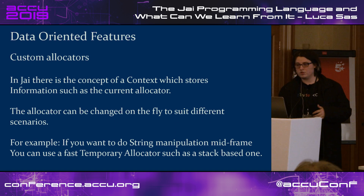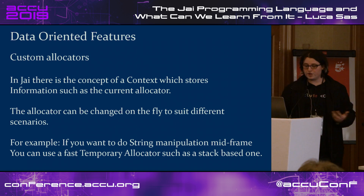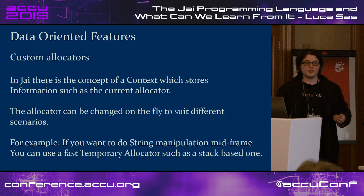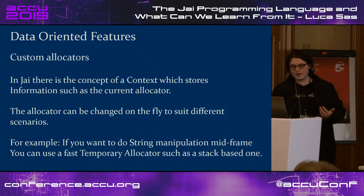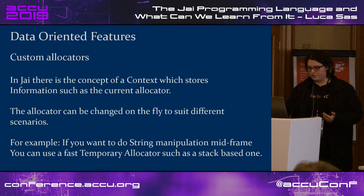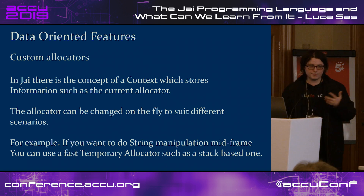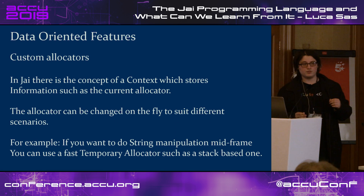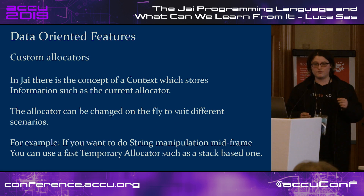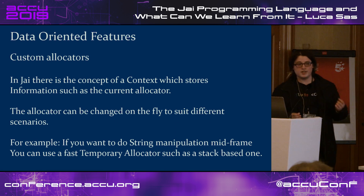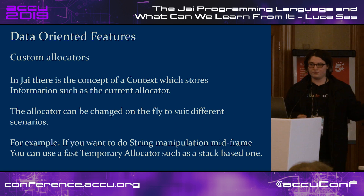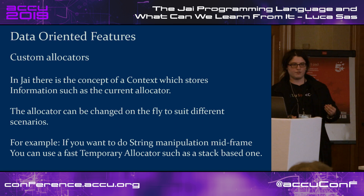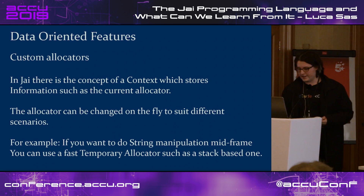Jai also has out-of-the-box support for custom allocators. There's a global struct called the context where you store allocator information and can change it dynamically at runtime. For example, for string manipulation mid-frame, you might want to switch to a stack-based temporary allocator that gets freed at the end of the frame.